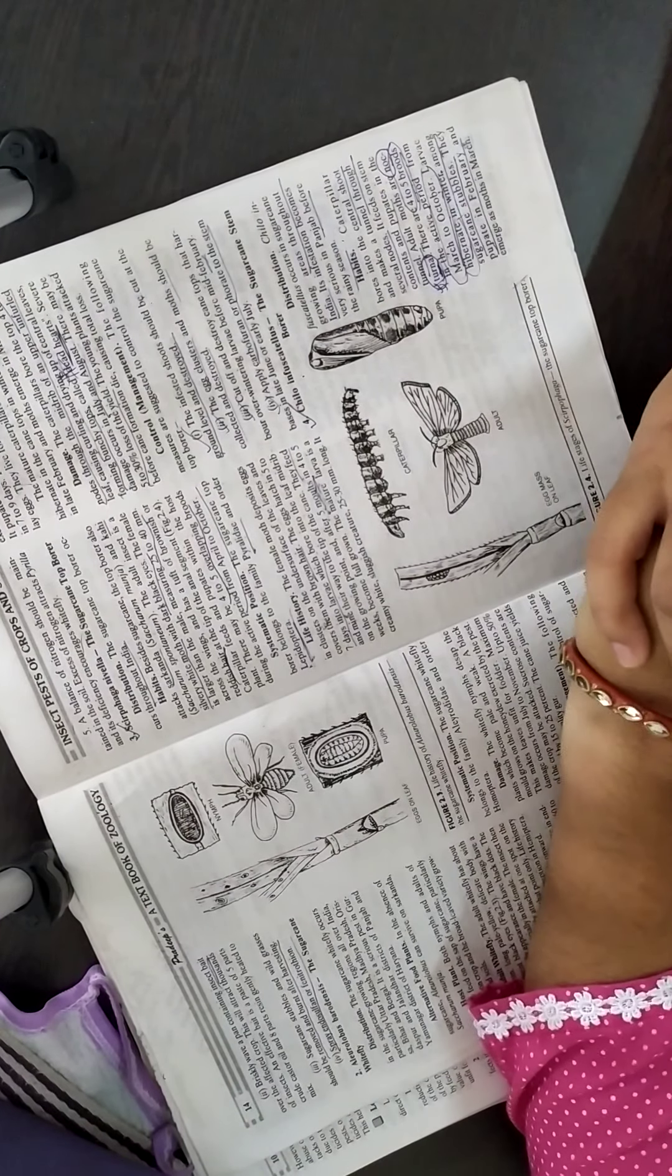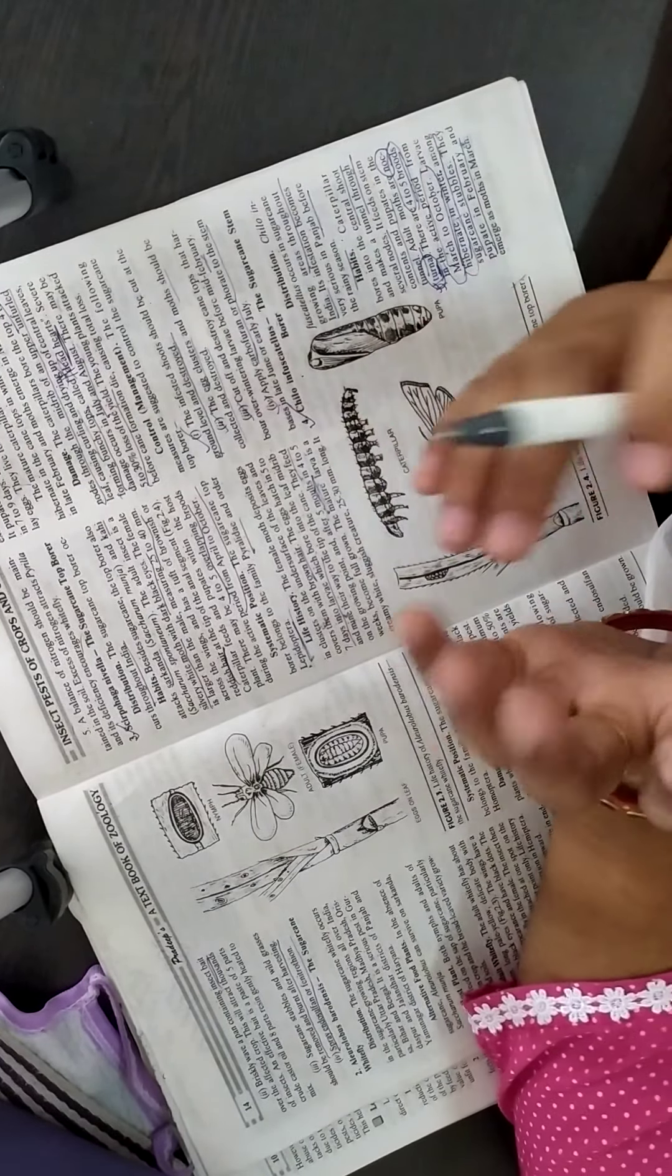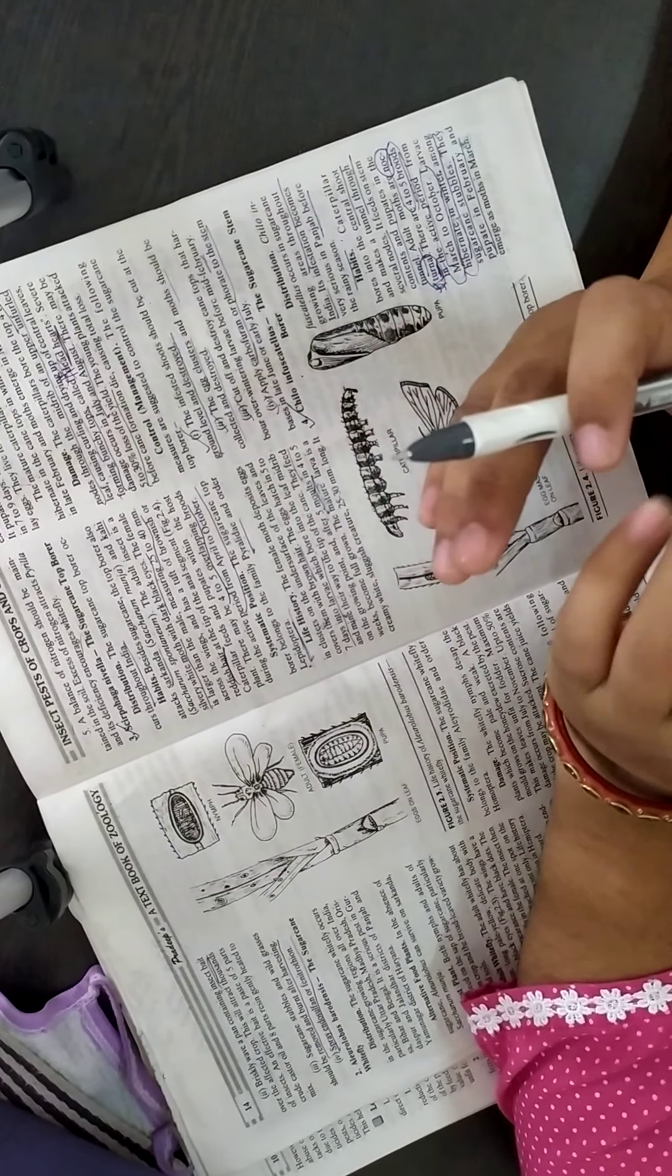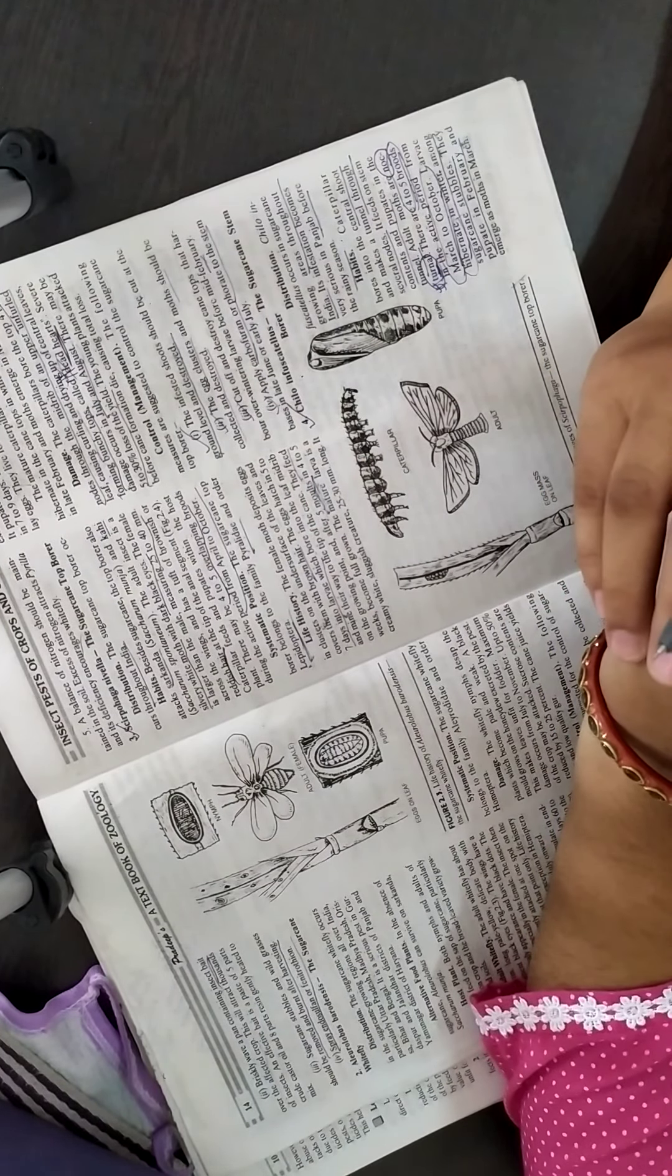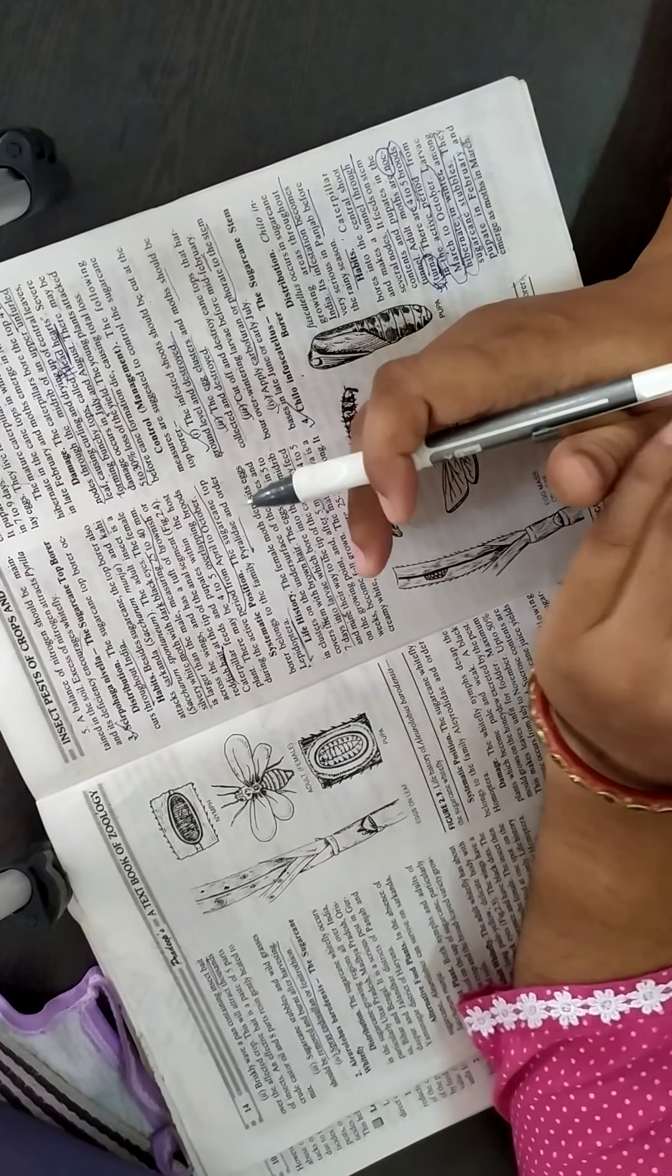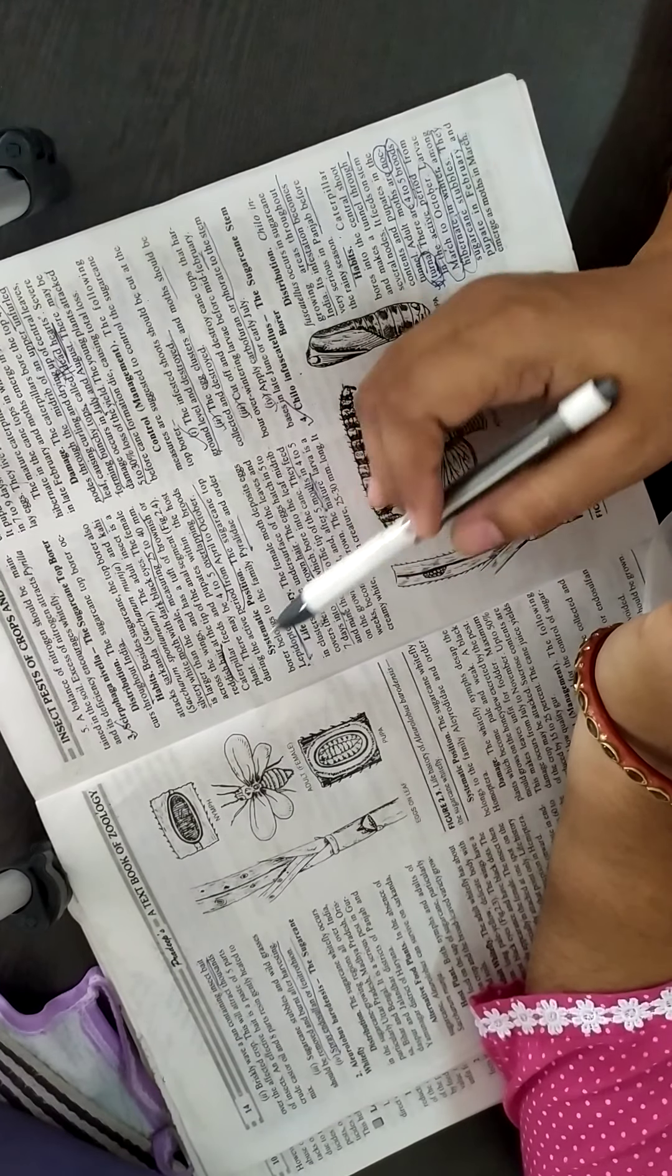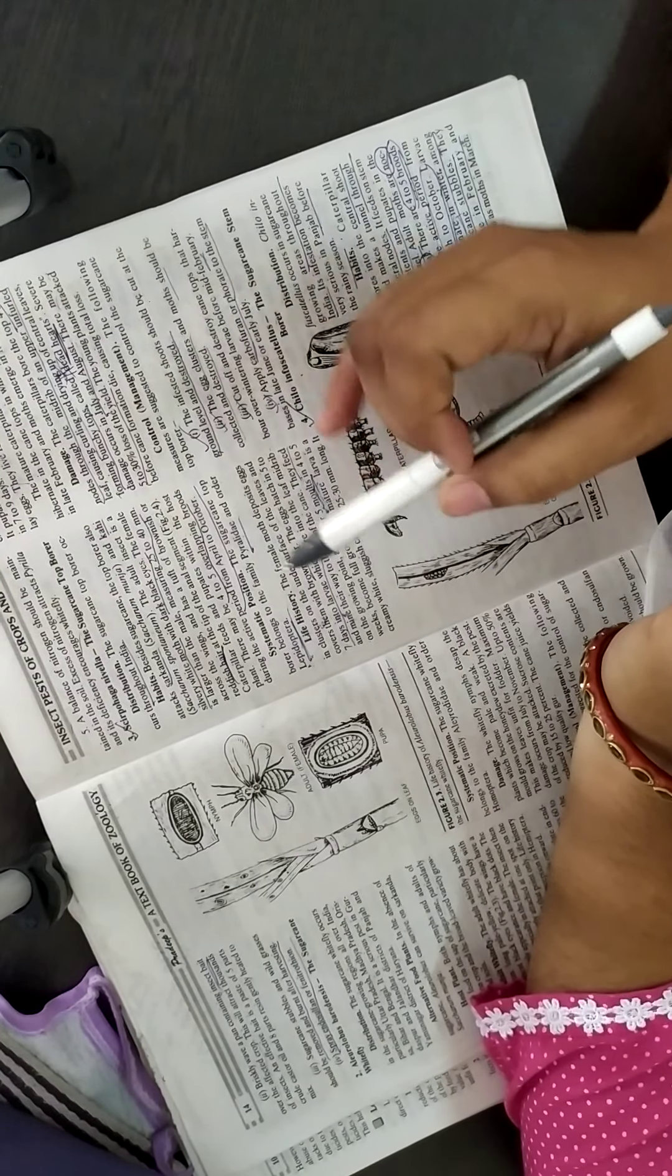Life history - actually their life history is not in your syllabus. So you can skip. If you want to study the life history of this pest, you can study from the book. Here I skip the life history of the sugarcane top borer.